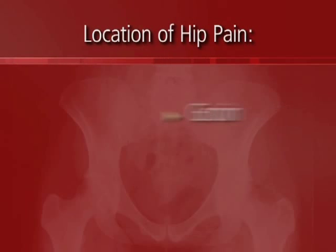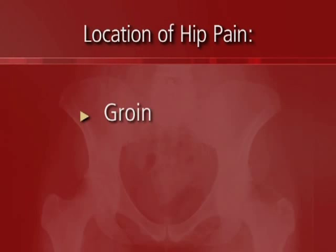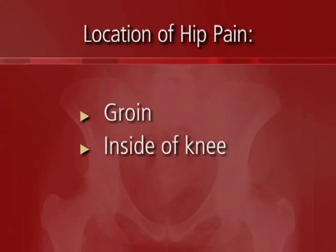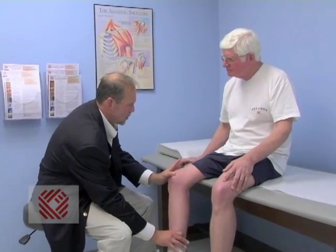When the hip starts to wear down, a lot of the pain is generated in the groin, in the front of the hip, as opposed to the side or the back. Sometimes, because of how the nervous system is set up, you can have pain referred to the inside of the knee. Every now and then we'll see someone come in saying they have knee pain, and it actually turns out to be a bad hip socket. As a rule, the pain from a bad hip socket is going to be in the front.